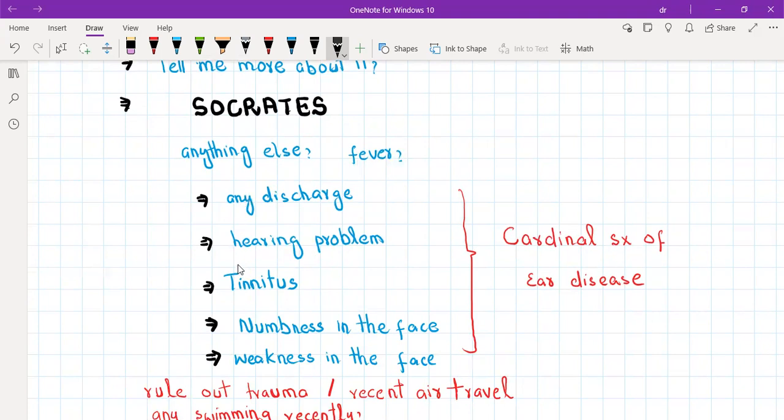After this, you should ask cardinal symptoms of ear disease. As I told you in a previous video, there are six cardinal symptoms of ear disease: ear pain, ear discharge, hearing problem, tinnitus or ringing in the ear, numbness in the face, and weakness in the face.